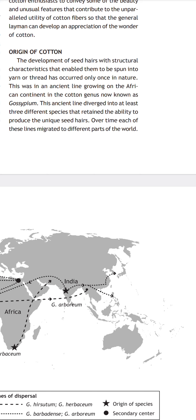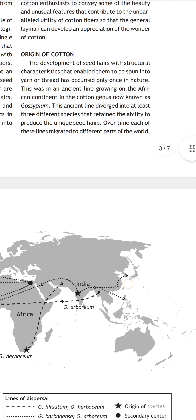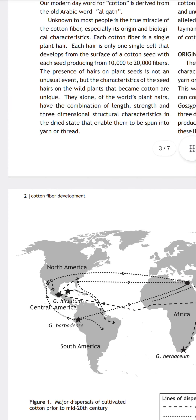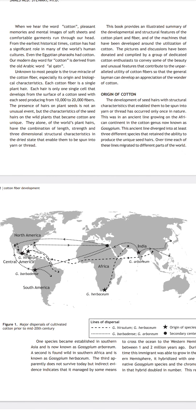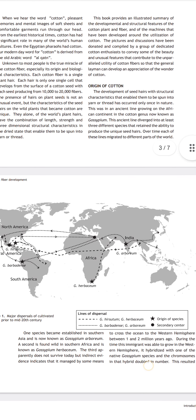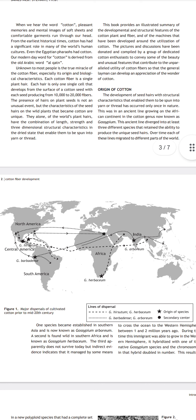In cotton, three different species retained the ability to produce unique seed hairs over time. Each of these lines migrated to different parts of the world. These are the origins of cotton across the globe: cotton from the African continent — barbadense and hirsutum from Central America, North America, and South America — and African cotton, mainly herbaceum, came to India and arboreum, beside our Indian neighboring countries.